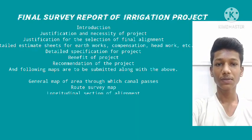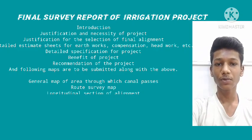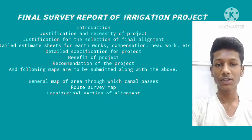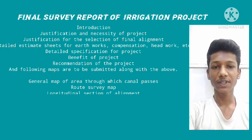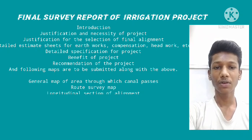Final survey report of the irrigation project. This is the last stage of the whole process. A report is prepared with details of the alignment and submitted to high authorities for approval. The report includes: introduction and justification of the project, selection of alignment, statement of details, estimate sheets for earthwork, headworks, etc., detailed specifications, benefits of the project, and recommendations. The following maps are submitted along with the report: general map of the area through which the canal passes, route survey map, longitudinal section and cross sections of alignment, contour map, alignment drawing of dam, headwork design, and cross drainage work details.